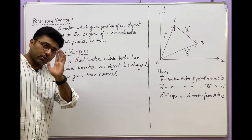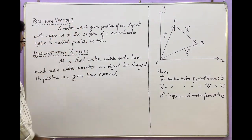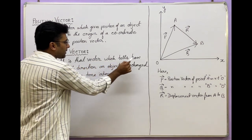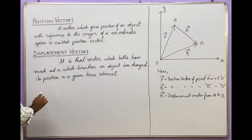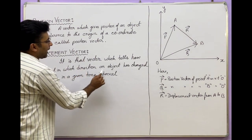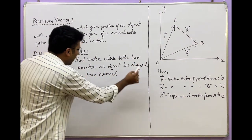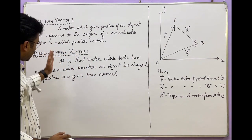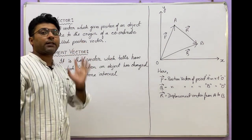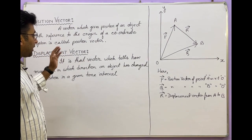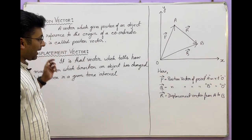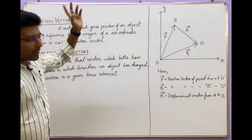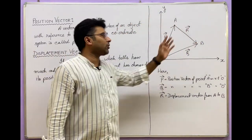Definition of displacement vector: it is that vector which tells how much and in which direction an object has changed its position in a given time interval. So the displacement vector connects two specific points and does not need to pass through the origin.